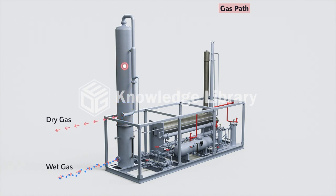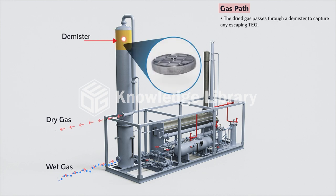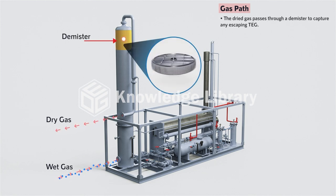The dried gas, just before exiting the absorber column, passes through a demister to capture any escaping TEG, minimizing loss.